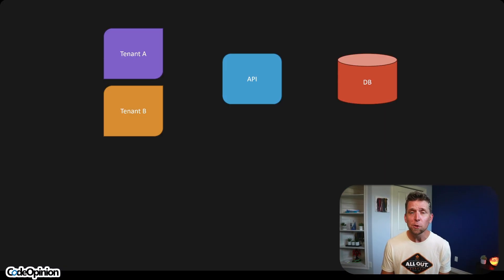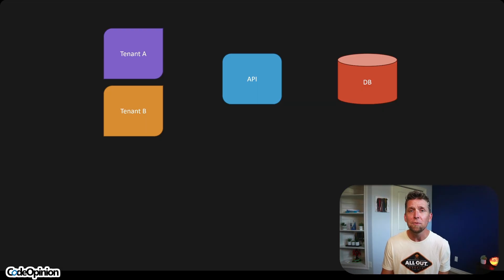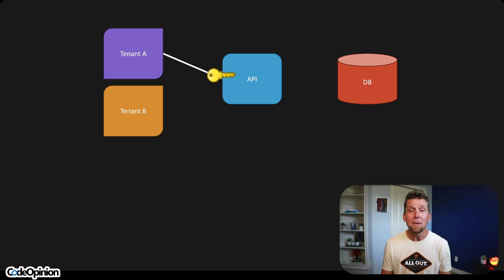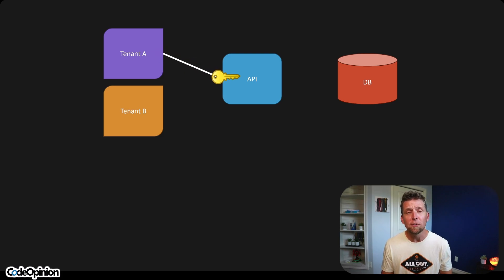That means that every request, we need to know who the tenant is. If you're using some type of bearer token, you can add the tenant ID as part of the claim. So when you're making that request, the API can get that, and when it's constructing the instance of our ORM, it can pass that along and now we have our query filter.